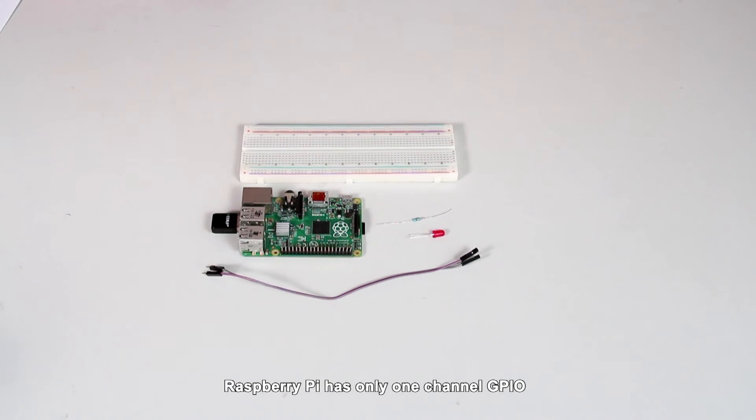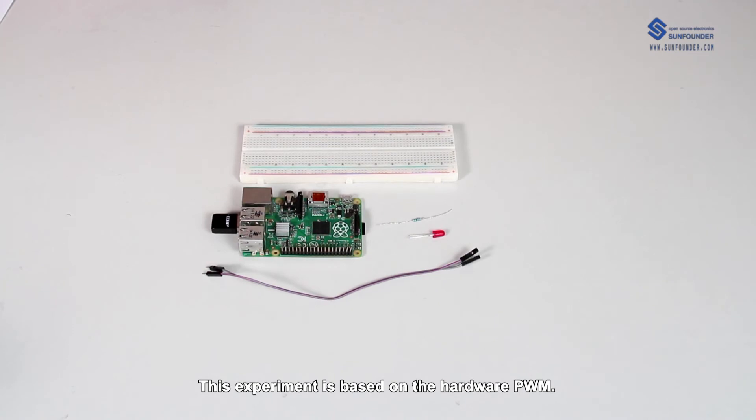Raspberry Pi has only one channel GPIO with hardware PWM function. That's GPIO1. If you want to use multi-channel PWM, you need to use the method of software to achieve it. This experiment is based on the hardware PWM.